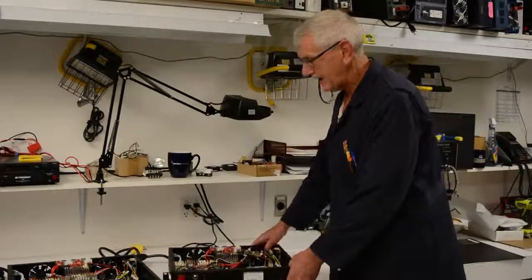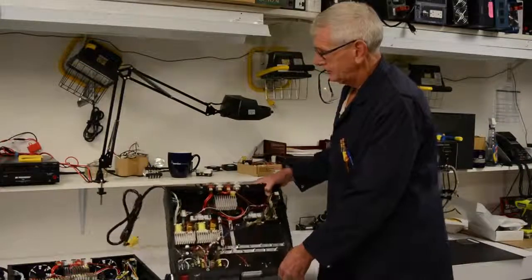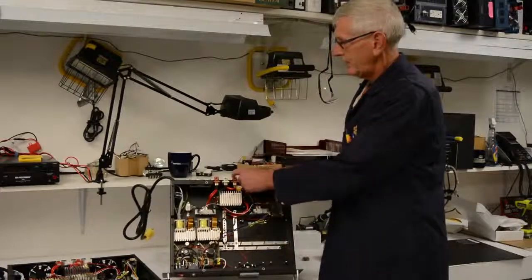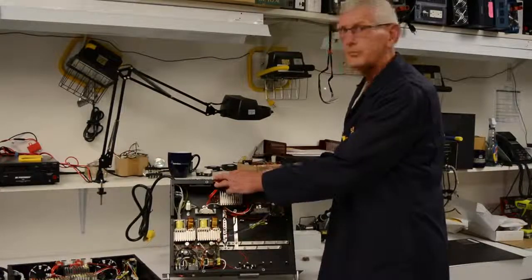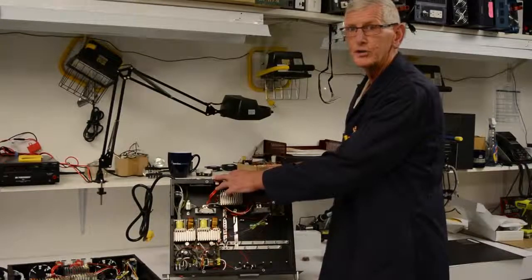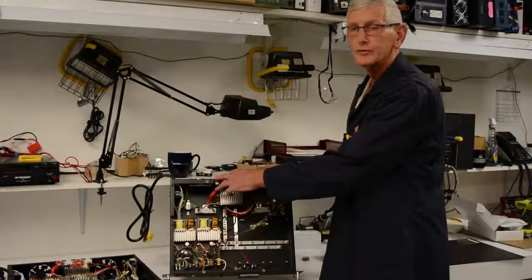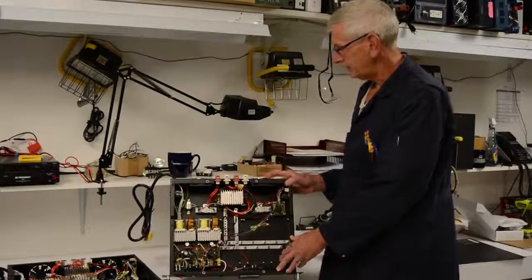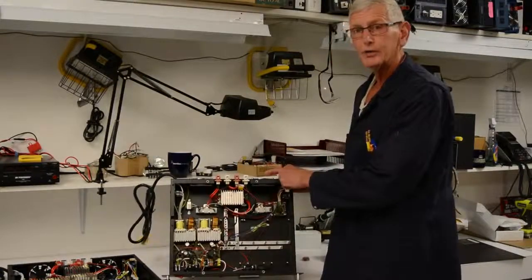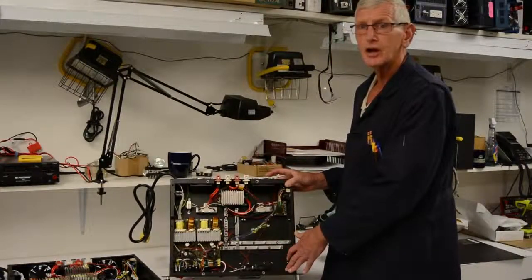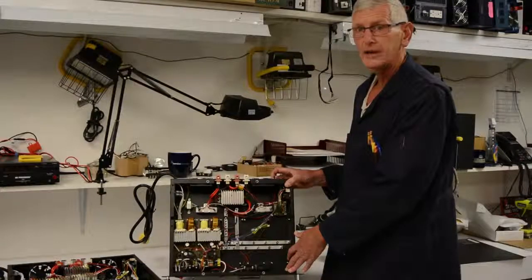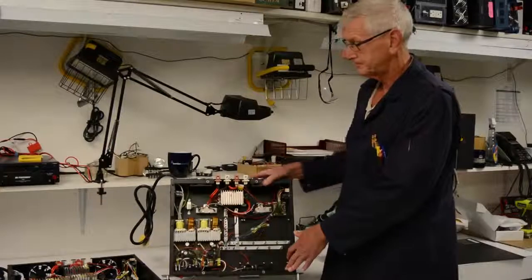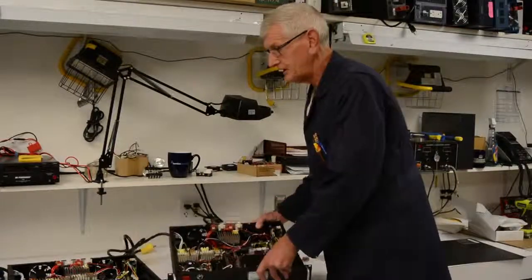On the back side, we have the load terminals for your DC load and the battery terminals. This is where you would have your battery bank attached for a battery backup. There's also an alarm output which has isolated alarms for any of the statuses of any of the modules and the status of the unit itself. So that's the main features on the unit.